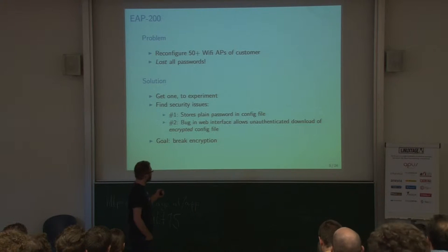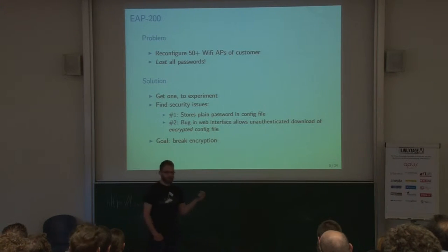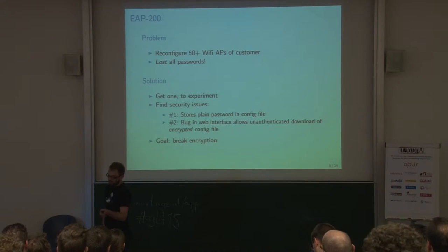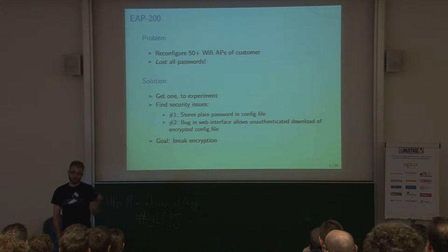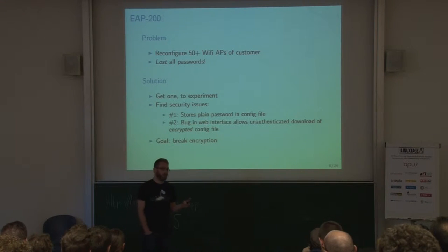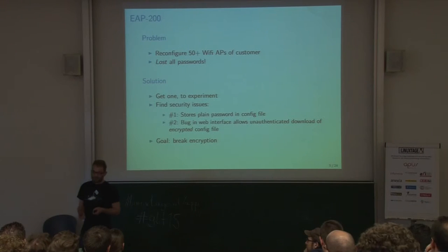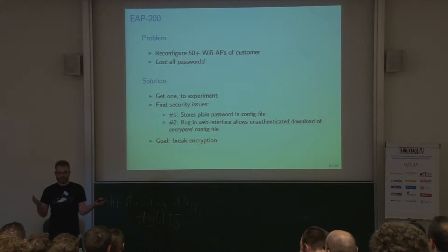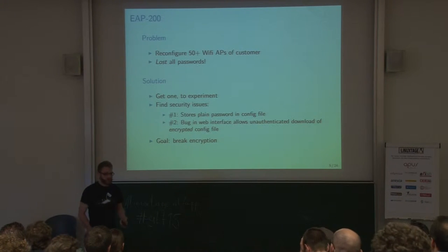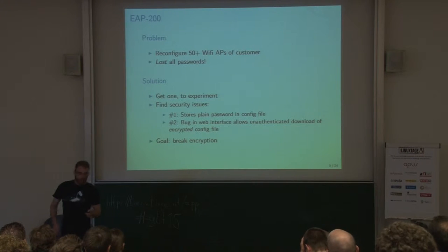We tried around a bit more and found out this configuration file can also be retrieved if you connect through a serial console, but you have to know the password for that. Then we saw that it stores the password in plain text — it's a simple XML file. So we had an encrypted file and a decrypted file, but not the one our customer was using, so we had to break the encryption.